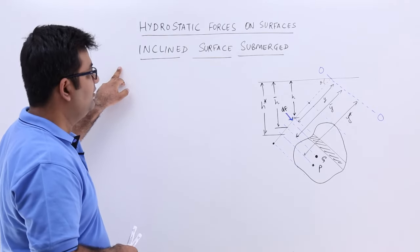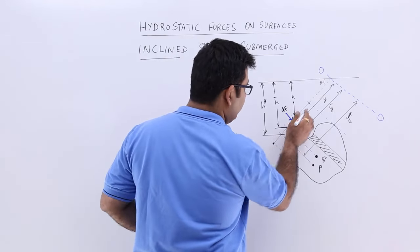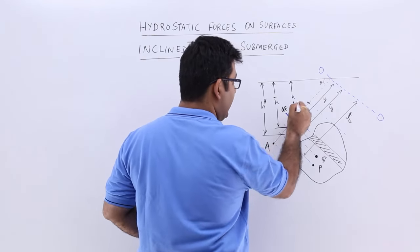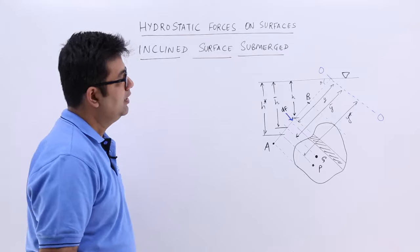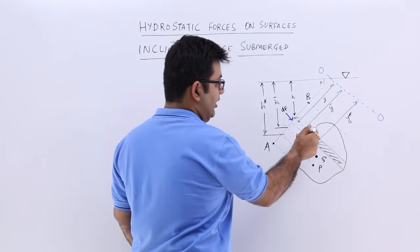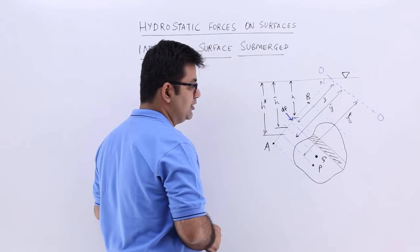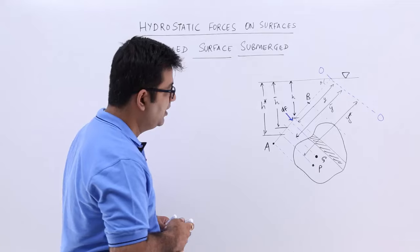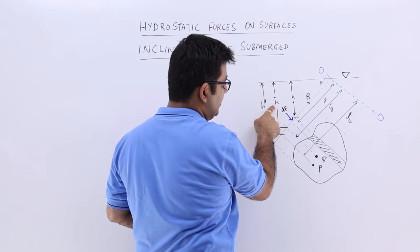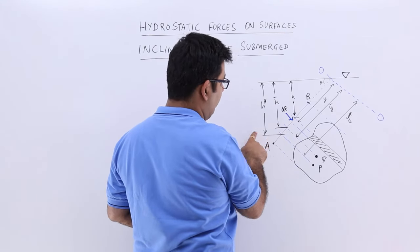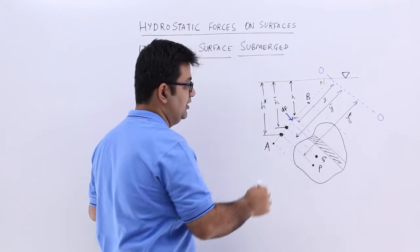Now let's talk about an inclined surface which is submerged. This is how the surface will look like — surface AB is at an angle theta to the free surface. If you look at it from the side, you will see an arbitrary shape. These are the centroid and the centre of pressure on this surface. The distance of the centroid from the free surface is always h-bar, and the location of the centre of pressure from the free surface is always h-star.